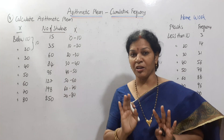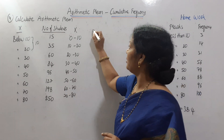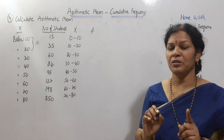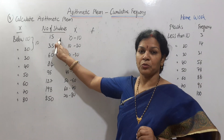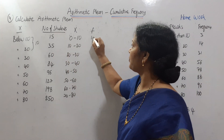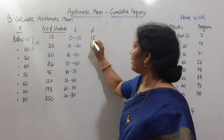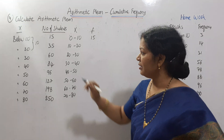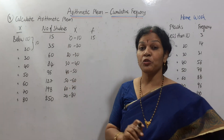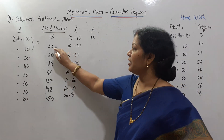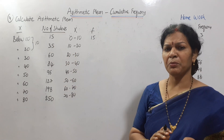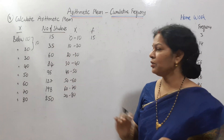There is a question — we will do this normally. First, we will give the minimum value as it is. The minimum value is 15, so 15 stays as it is. Then we subtract: 35 minus 15 equals 20.